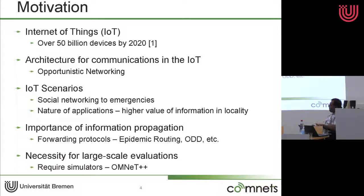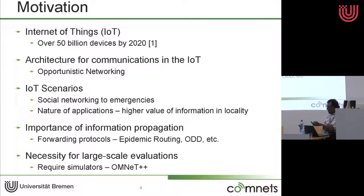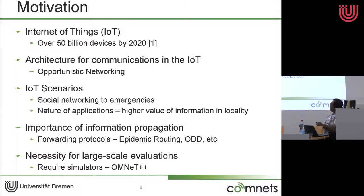When using opportunistic networks, one of the important things is how well information spreads. To do that, there are many different routing, forwarding, propagation, or dissemination approaches — many names for it. One of the most widely used is epidemic routing. We have also proposed one called organic data dissemination, which we are actively evaluating in OOPS. Since we're talking about IoT, the scale is huge — unlike traditional networks — so we definitely require not testbeds, but simulators. Our choice was Omnet.